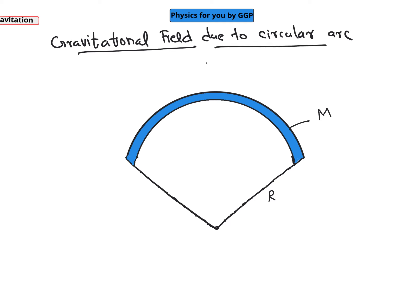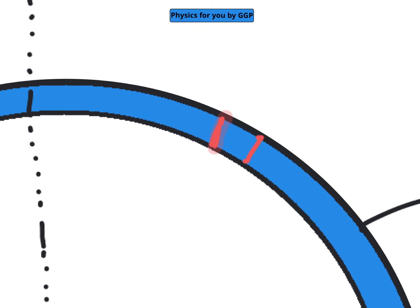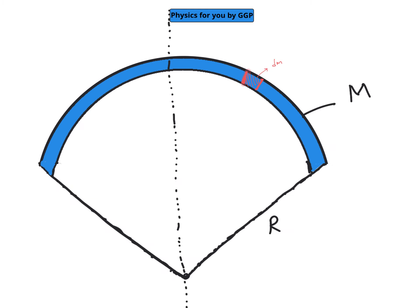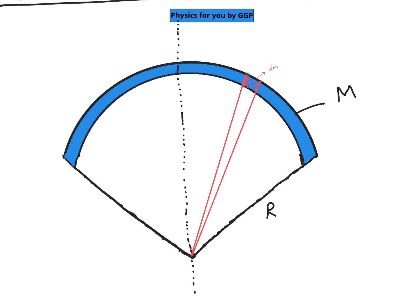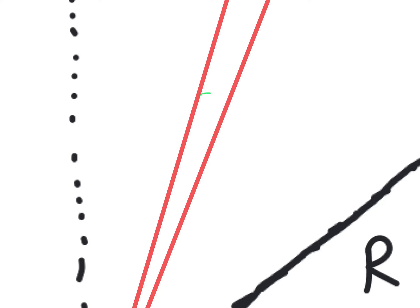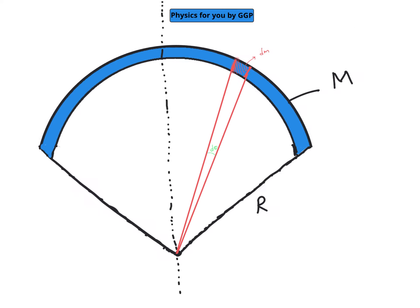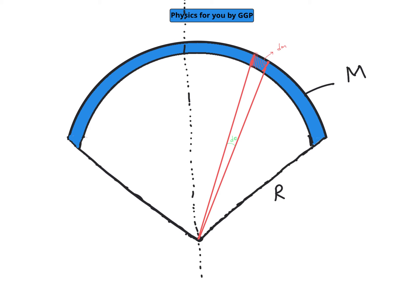For the calculation, we divide the arc into two parts by drawing a bisector. We consider a small element of mass dm on the arc. This element makes an angle dθ with respect to the center, so the small element of mass dm subtends an angle dθ. We first find the gravitational field due to this small element dm at the center.